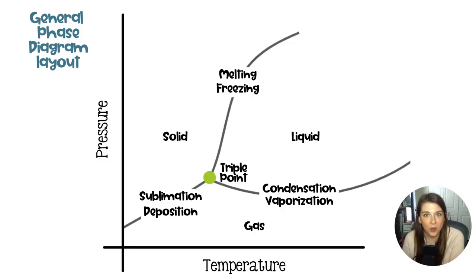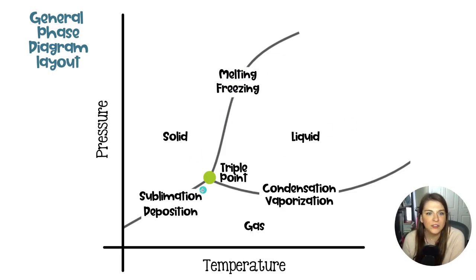That is all. At the high school chemistry level, you are very rarely graphing these things — more often, you are interpreting graphs. You would just use your graph reading skills, and I really don't see that being an issue for most high school chemistry students. Please leave any questions you have in the comment section below the video. Subscribe so you don't miss the next lesson, and I will see you there. Bye.